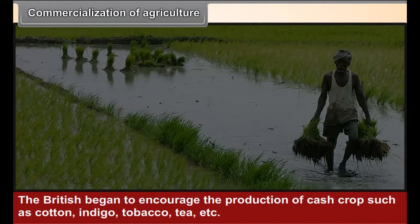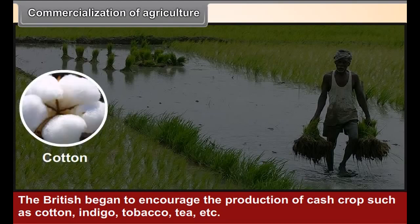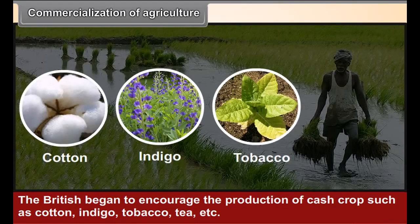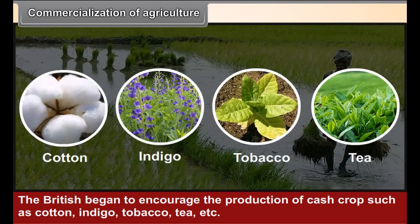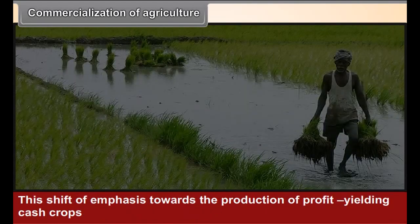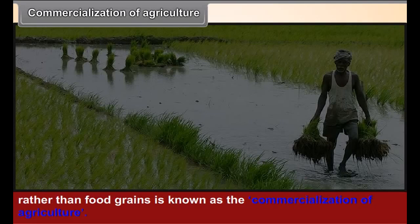The British began to encourage the production of cash crops such as cotton, indigo, tobacco, tea, etc. This shift of emphasis towards the production of profit-yielding cash crops rather than food grains is known as the commercialization of agriculture.